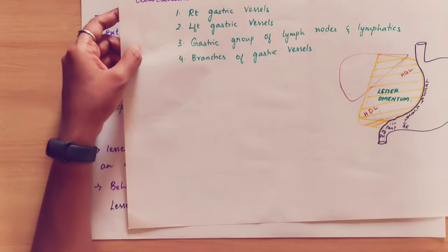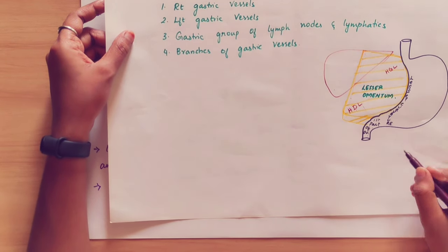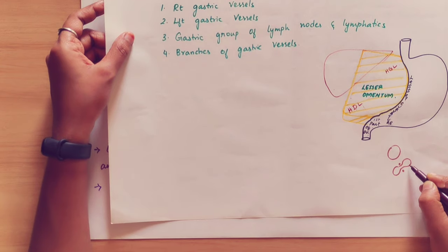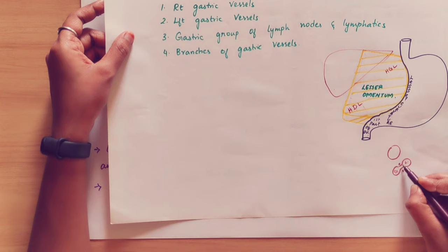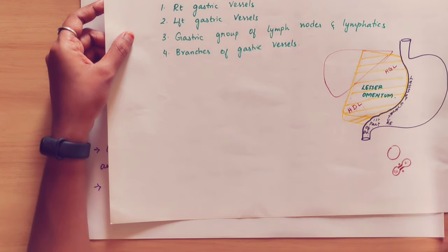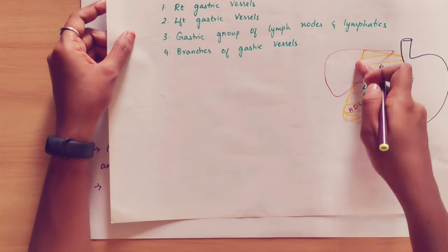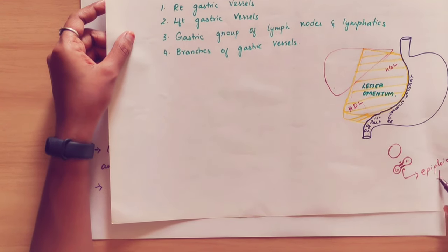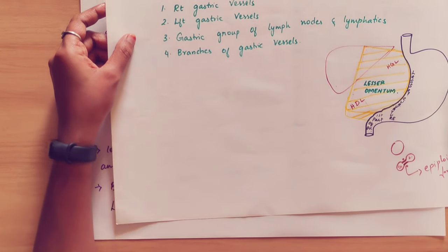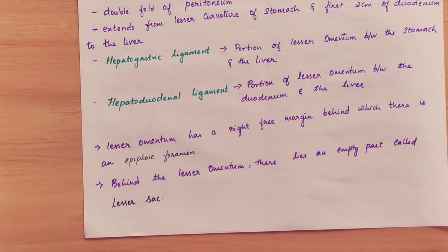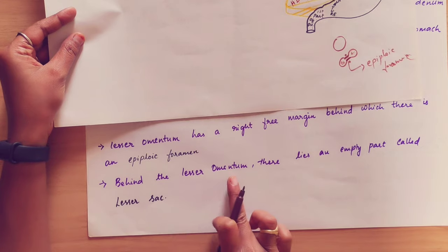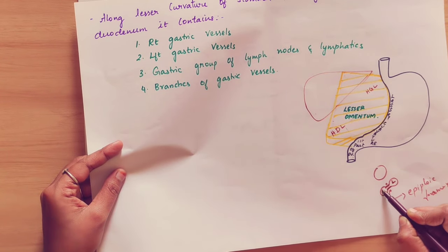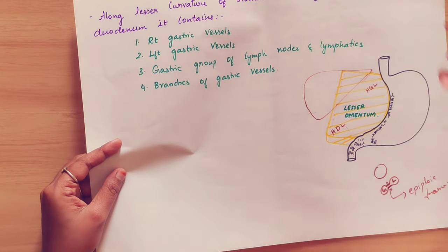The right free margin leads to the epiploic foramen. The peritoneal cavity is divided into two sacs: the lesser sac and the greater sac. The lesser sac and the greater sac communicate through the passage of the epiploic foramen. Behind the lesser omentum there lies an empty space called the lesser sac.